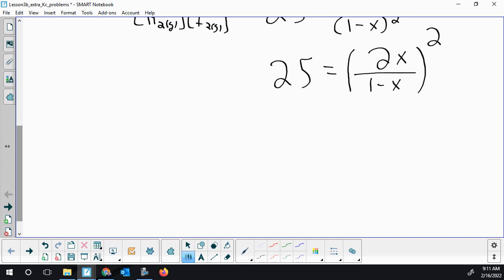I've got that square can be gotten rid of if I square root that whole right-hand side - that will cancel out the square. So I have to square root the left-hand side. Square root of 25 is 5. The square root and the square is gone, so we have 2x over 1 minus x.